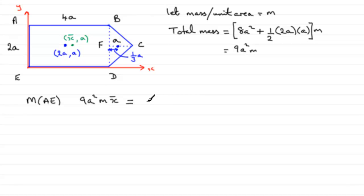So its mass is going to be 2A times 4A, 8A squared, multiplied by M, the mass per unit area. And we need to multiply that by the distance back to the edge AE, which is 2A. And then to that we add the moment of the triangular lamina BCD.